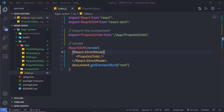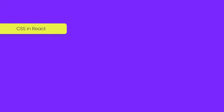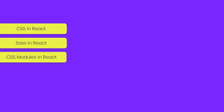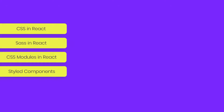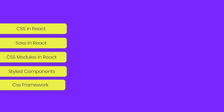To style the React component, we have: first, CSS in React — we create a .css file and style the React component. Second, we have Sass in React — we create a Sass file and use it to style the React component. Third, we have CSS modules in React. Fourth, we have styled components. Fifth, we have CSS frameworks, and finally, we have inline CSS. Let's start with the first one.